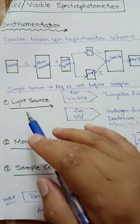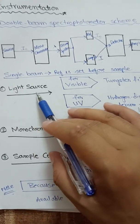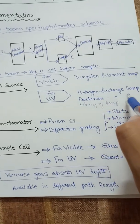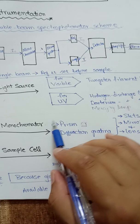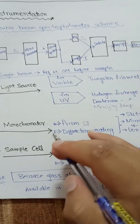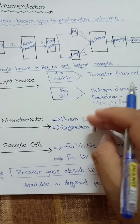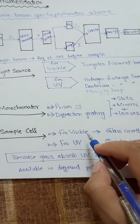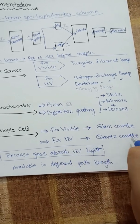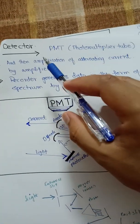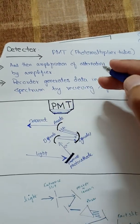Different instrument components include: light sources — tungsten filament for the visible region, and hydrogen discharge, deuterium, or mercury lamps for the UV region. The monochromator consists of a prism or diffraction grating with entrance and exit slits, mirrors, and lenses to isolate a single wavelength. For sample cells, glass cuvettes are used for visible light, and quartz cuvettes for UV, since glass absorbs UV radiation.